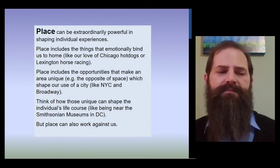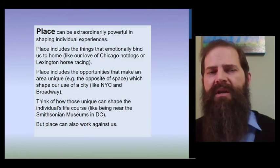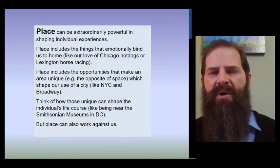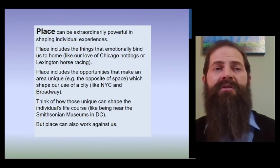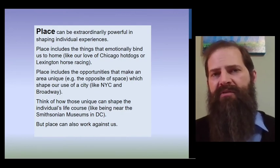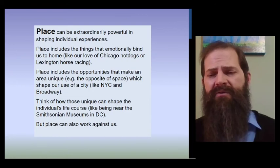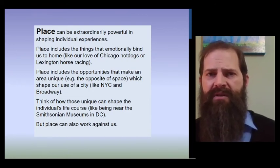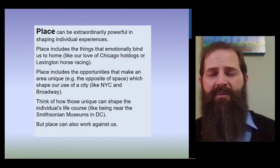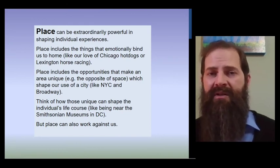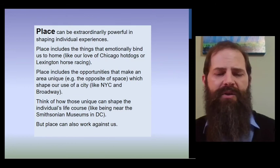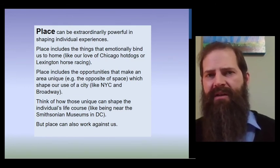Likewise, think about how these unique resources shape our experiences. Imagine being in a scenario where you had access to the Smithsonian's anytime you wanted. Imagine living in parts of Virginia or the District of Columbia where you could take a bus to the Smithsonians and experience them. Think about the educational value of being in a school in that area, compared to a school in counties around Eastern Kentucky University, where museums that might exist are one-room local museums — while very valuable, they don't compare to something like the Smithsonian. You can see how place can be a very special thing in supporting us.